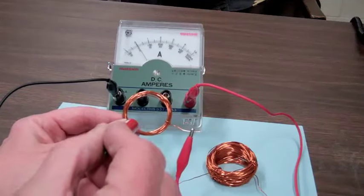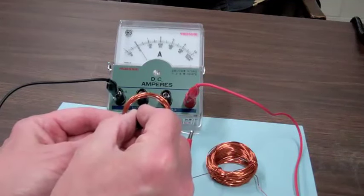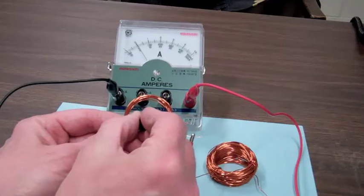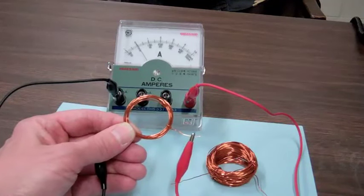Ok, so when the magnetic field is changing going into the coil, there is a positive current flowing. When it is changing coming out of the coil, there is a negative current flowing.